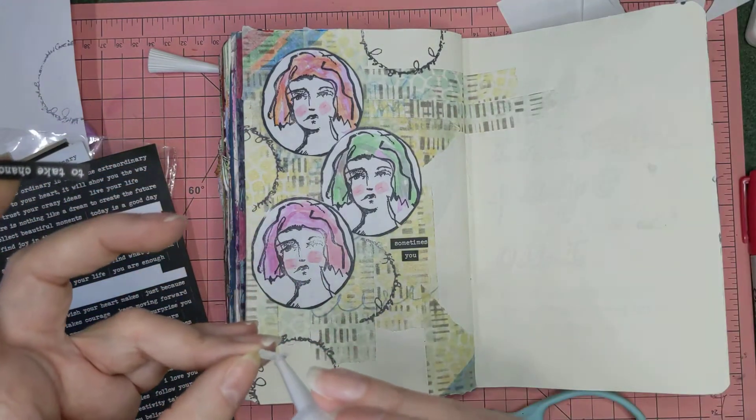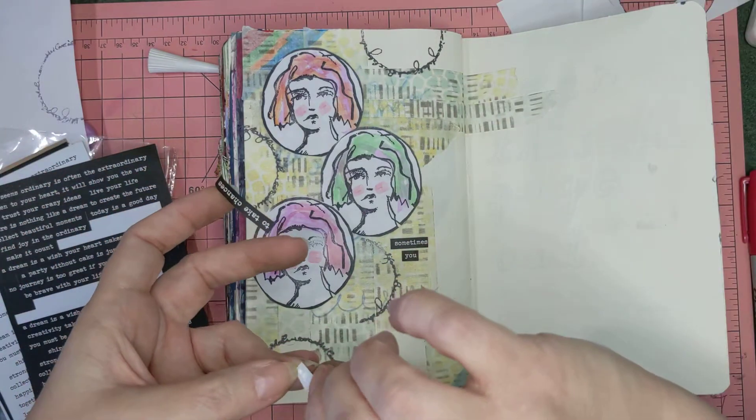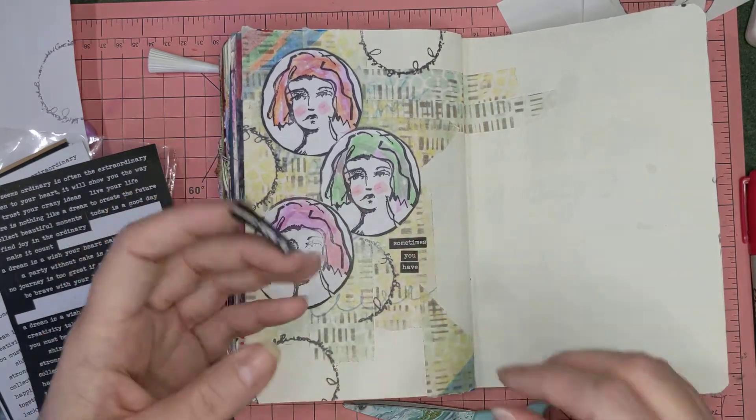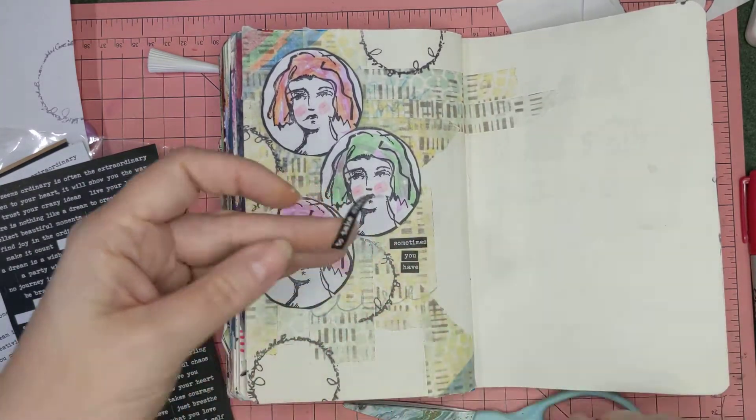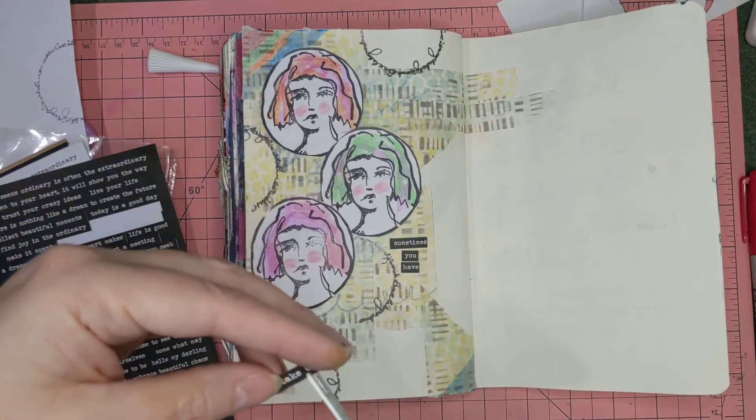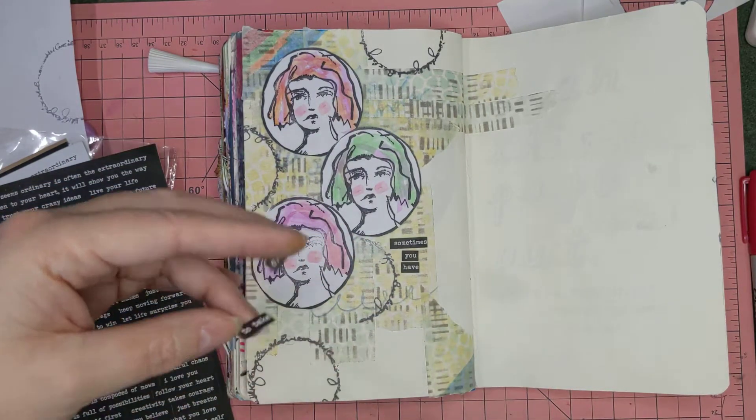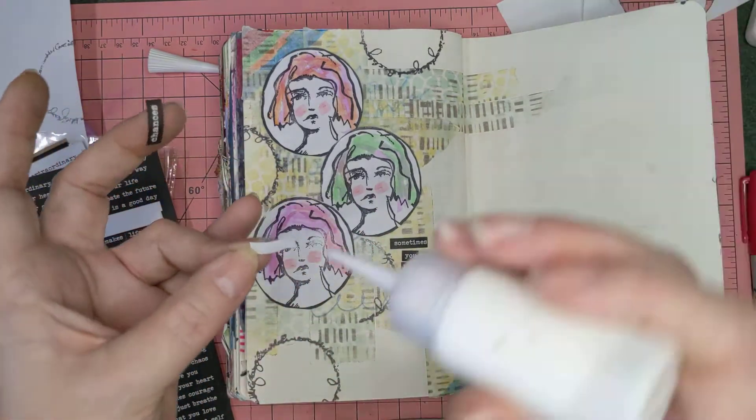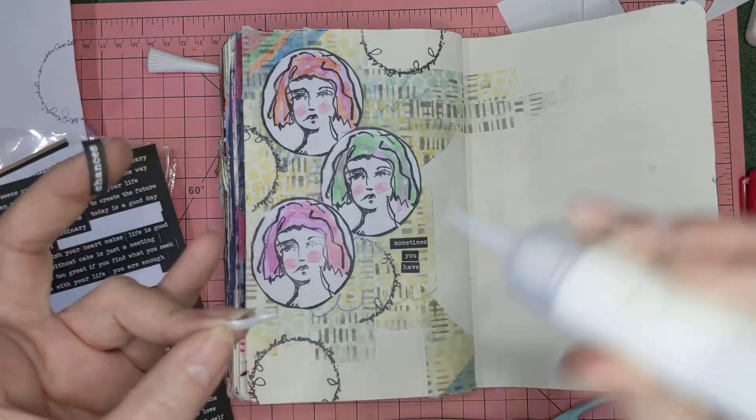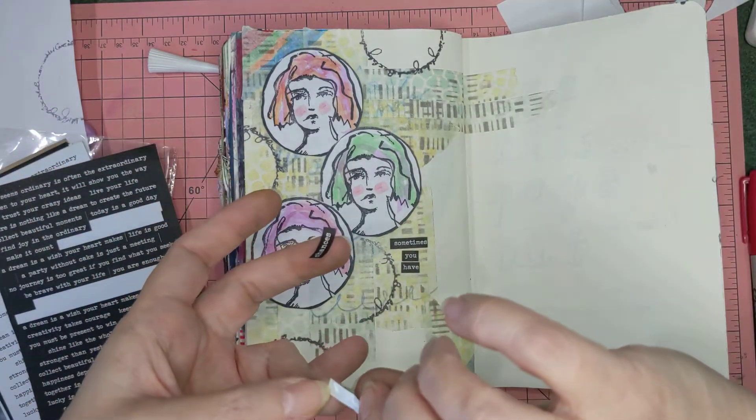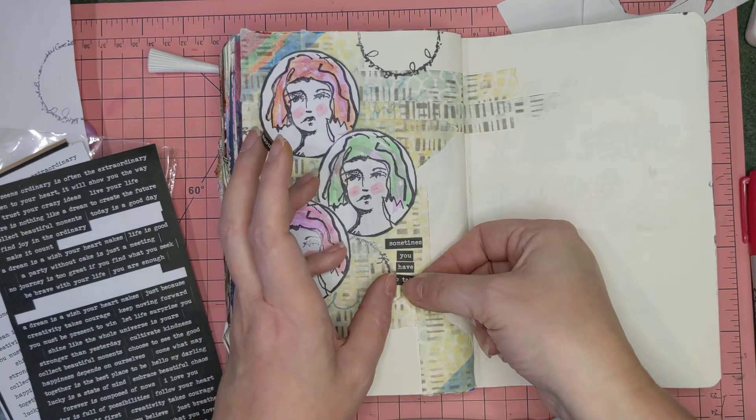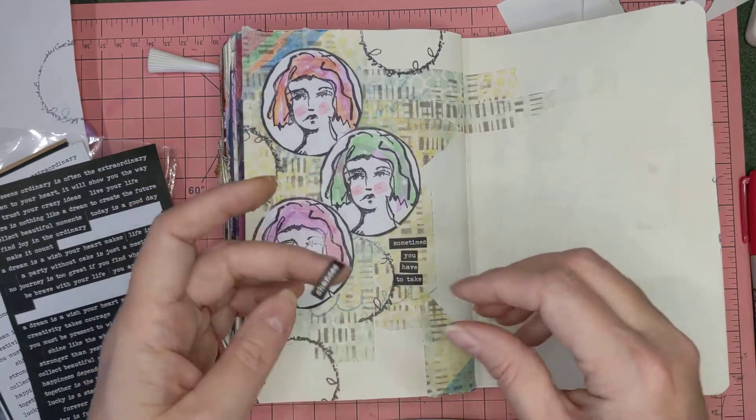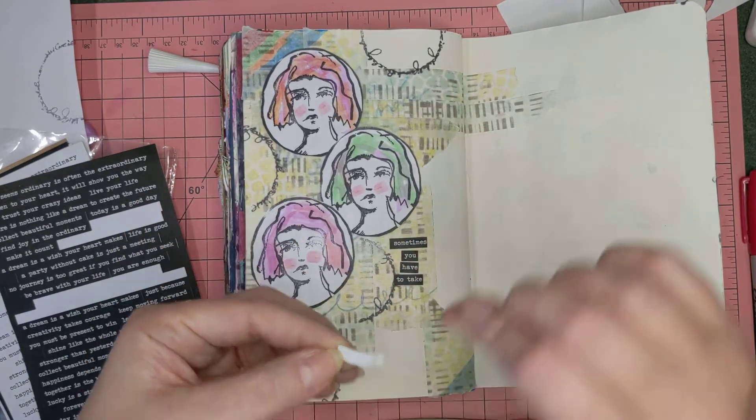Again, when I do my art journal pages, I don't always think ahead of how I'm going to do the whole thing. So we tend to just do things and try and see what works and what doesn't work. You have to take a chance, see what works. It's all about having fun and experimenting. It's not about perfection.